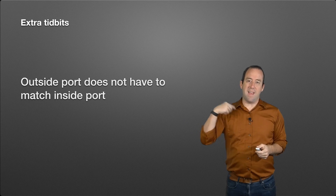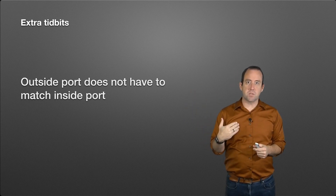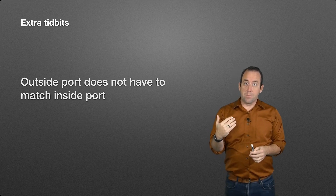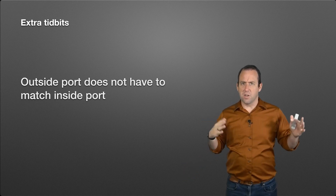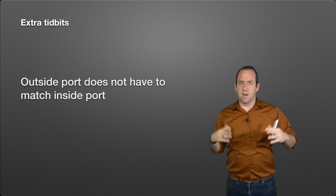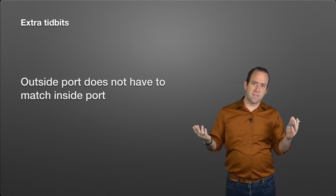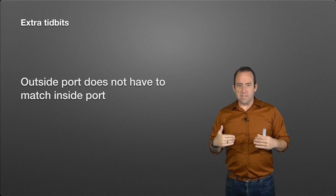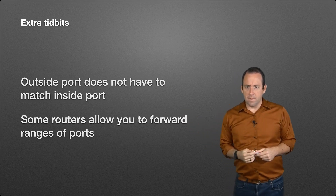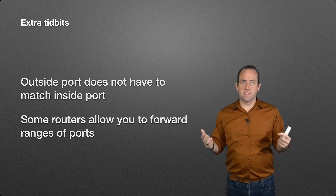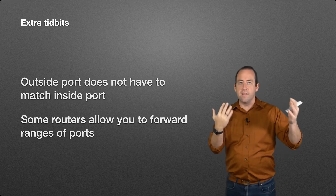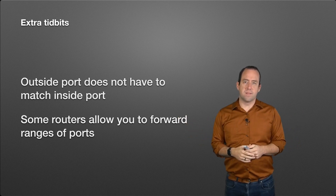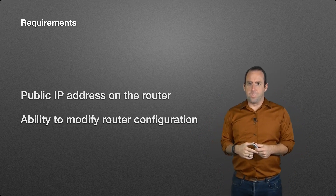A couple of extra things worth knowing: the outside port does not have to match the inside port. You could accept traffic on port 4820 externally and forward it to something running on port 80 internally — this is a form of security through obscurity, using non-standard external ports while running standard ports internally. Also, some routers allow you to forward ranges of ports, for example forwarding everything from port 19000 to 19020 to a specific device.